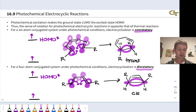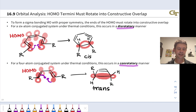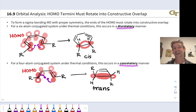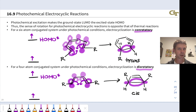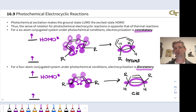To summarize: under thermal conditions, 6-pi (4n+2) electrocyclizations occur in a disrotatory manner, while 4n electrocyclizations occur in a conrotatory manner, based on orbital symmetry arguments. Under photochemical conditions, the opposite holds: 6-pi and other 4n+2 electrocyclizations occur in a conrotatory manner, while 4-pi and other 4n electrocyclizations occur in a disrotatory manner.